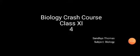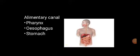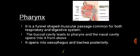Welcome to the 4th session of Biology Crash Course. In this module, we will be learning about 3 parts of the alimentary canal, namely pharynx, esophagus and stomach. First, let us begin with pharynx.